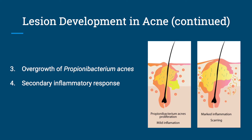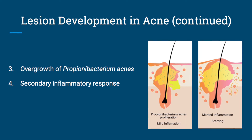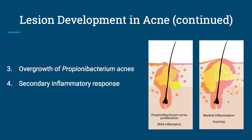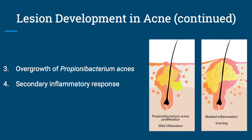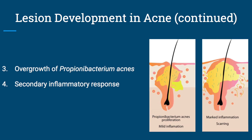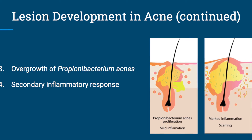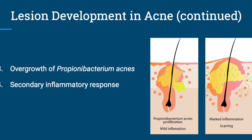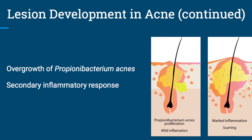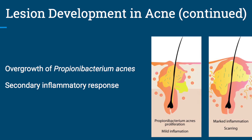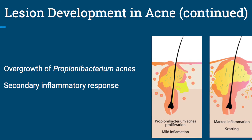Overgrowth of P. acnes also causes acne development. The clogged follicle environment protecting the bacteria, in addition to the sebum acting as a nutritional source, leads to bacterial overgrowth. Finally, secondary inflammatory response — bacteria will signal for neutrophils, which leads to pustule formation. The follicular wall will rupture in response to neutrophilic enzyme activity, leading to increased inflammatory reactants entering the dermis. A papule, pustule, or acne nodule will arise in response to lymphocytes, macrophages, and neutrophils.